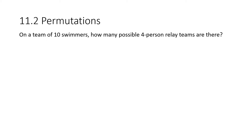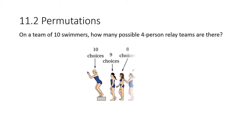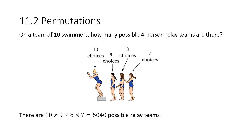We could solve this problem by using the fundamental counting principle. There are 10 choices for the first, 9 for the second, 8 for the third, and 7 choices for the fourth position. That is, there are 10 times 9 times 8 times 7, which is 5,040 possible relay teams.